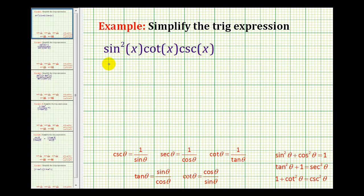So because we'll have fractions, let's go ahead and write sine squared x over one times cotangent x, which is equal to cosine x divided by sine x, and then cosecant x is one over sine x. And we can see now things start to simplify.